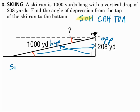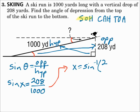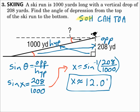Since I have opposite and hypotenuse, I'll use sine. Sine of theta equals opposite over hypotenuse. Substitute in: my angle is x, opposite is 208, and hypotenuse is 1,000. Since I'm looking for the angle, do the inverse function. X equals arc sine of 208 over 1,000. When you punch that in, you get approximately 12.0 degrees. Is that a logical answer? Sure — that's a very narrow angle, and 12 degrees would work.